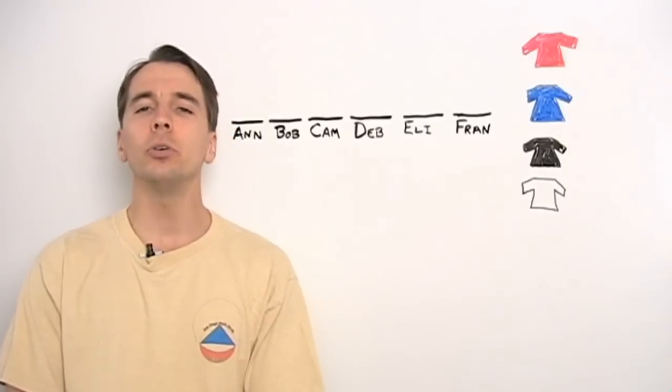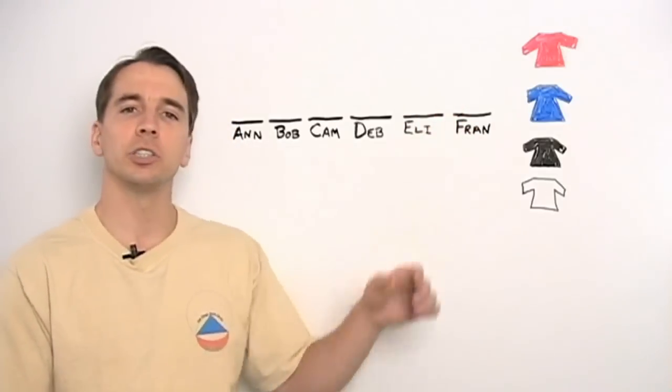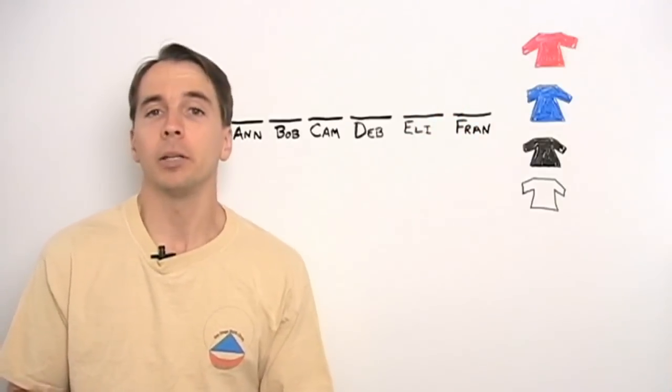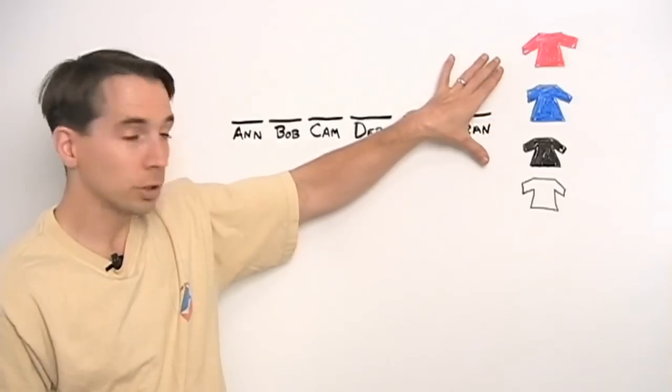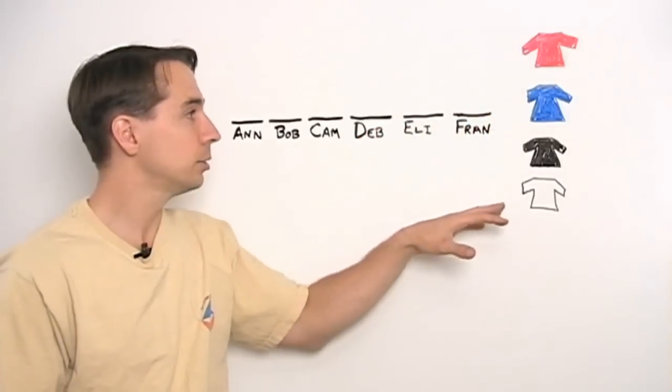And they always sat in the same order because we had assigned seating. Now, how did we know they were cool? Well, we could tell by the color of their shirts because apparently that's how you tell who's cool in middle school. And yes, those are shirts: red, blue, black, and white.